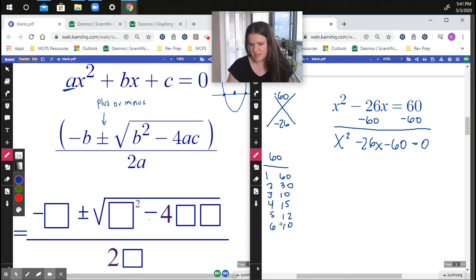And if I go down my list here and I want to see, one has to be positive, one has to be negative, which one are 26 apart? There isn't any.